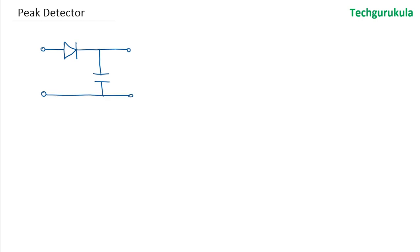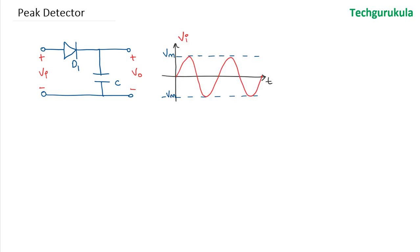This circuit is very similar to a half wave rectifier, just in place of a resistor we have a capacitor here. We have the input voltage and the output voltage. Let the input voltage be a sinusoid: Vi = Vm sin(ωt). To start, assume the capacitor holds no charge, which means the voltage across the capacitor is 0.